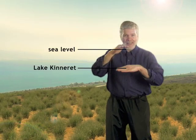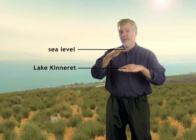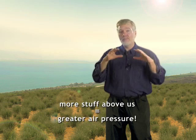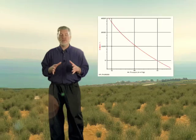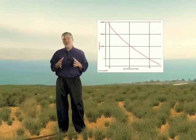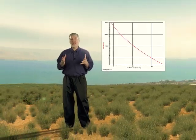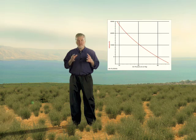Finally, we are at Lake Kinneret, the Sea of Galilee in Israel. Lake Kinneret is the lowest freshwater lake on earth, located in the Great Rift Valley. The elevation of the lake is 696 feet below sea level. Because there is more stuff above us, like at the Salton Sea, the pressure is greater. Now that you know the elevations of these locations, use the air pressure versus altitude chart to determine the approximate air pressure on a standard day for each location.